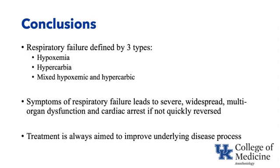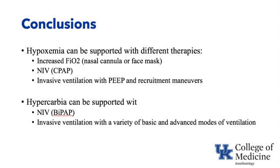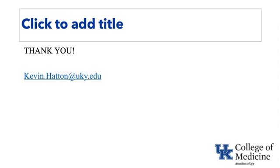In conclusion, respiratory failure is defined by three types: hypoxemia, hypercarbia, and a mixed hypoxemic-hypercarbic form. The symptoms lead to severe multi-organ dysfunction and cardiac arrest if not quickly reversed, and treatment is always aimed at improving the underlying disease processes. Hypoxemia can be supported with increased FiO2 via nasal cannula or face mask, non-invasive ventilation including CPAP, and invasive ventilation with PEEP and recruitment maneuvers. Hypercarbia can be supported with non-invasive ventilation, particularly BiPAP, and invasive ventilation with basic and advanced modes. Thank you.